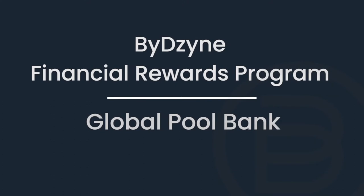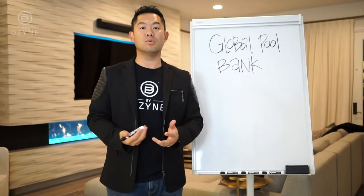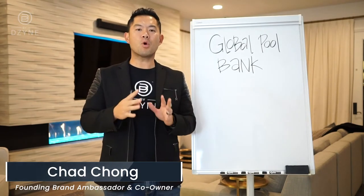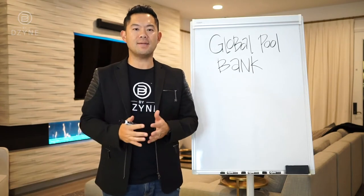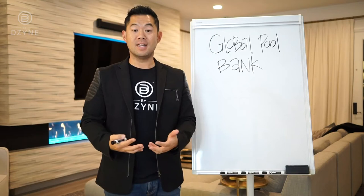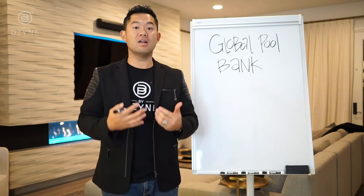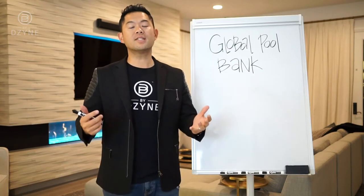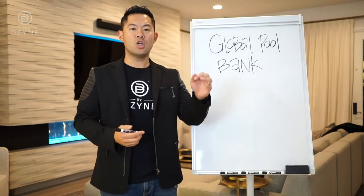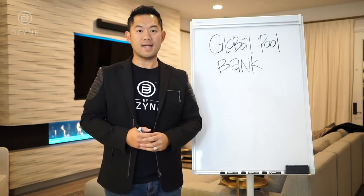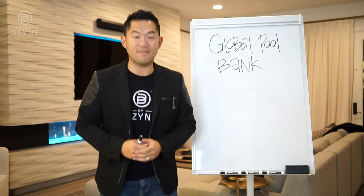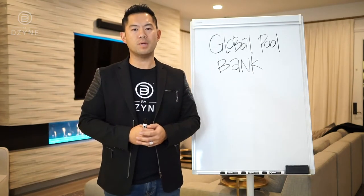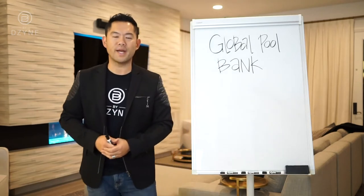Let's talk about the Global Pool Bank. The Global Pool Bank is only for people who are a Pro Builder, so if you're not a Pro Builder, get to Pro Builder as soon as possible so you don't leave this bonus on the table. A Pro Builder means you've sponsored three brand ambassadors on the right and three brand ambassadors on the left — just one time in your career, not necessarily in one cycle. Once you do that, you're a Pro Builder for life.